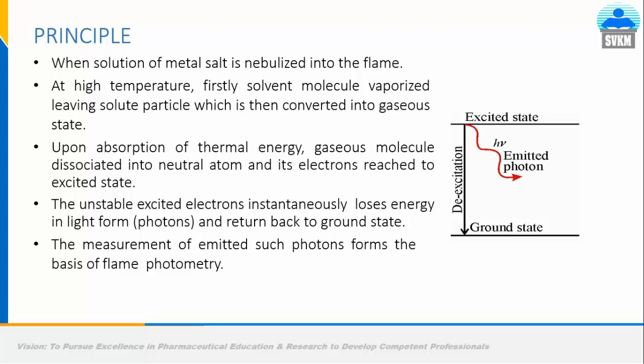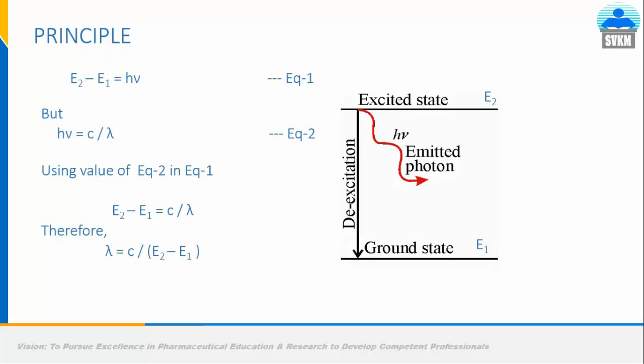The measurement of emitted photons is carried out by flame photometry. The principle is represented mathematically. The common equation is E = hν, where E is energy, h is Planck's constant, and ν = c/λ, where c is the speed of light and λ is the wavelength. Since excited state electrons return to the ground state by losing energy, E can be represented as ΔE = E₂ − E₁ = hν. The final equation for wavelength is λ = c / (E₂ − E₁).